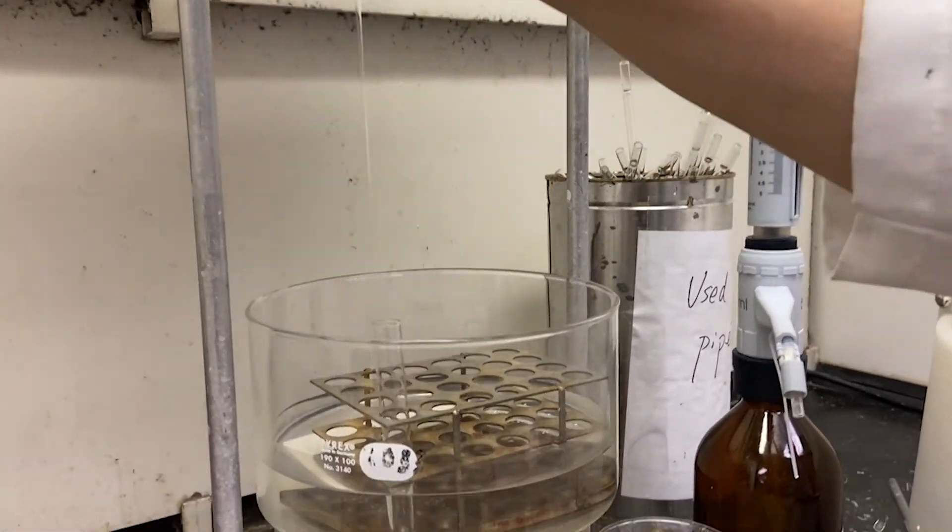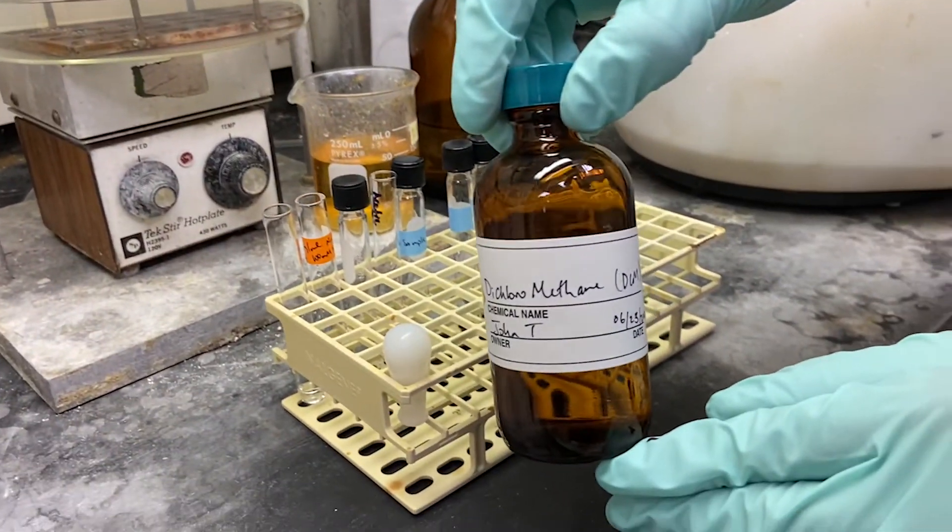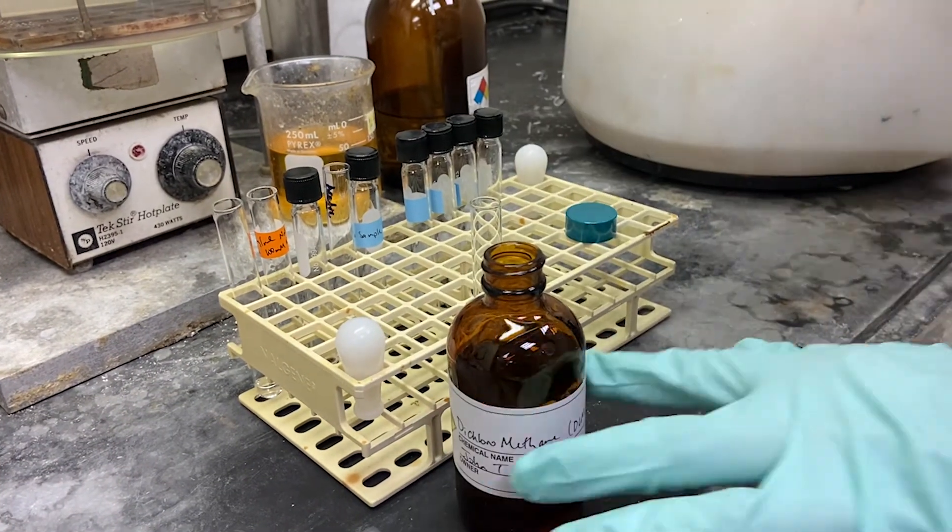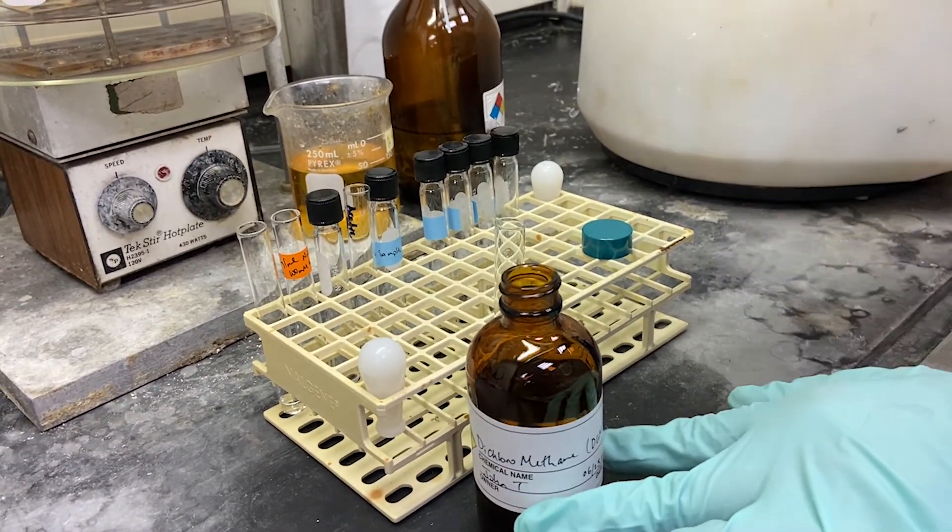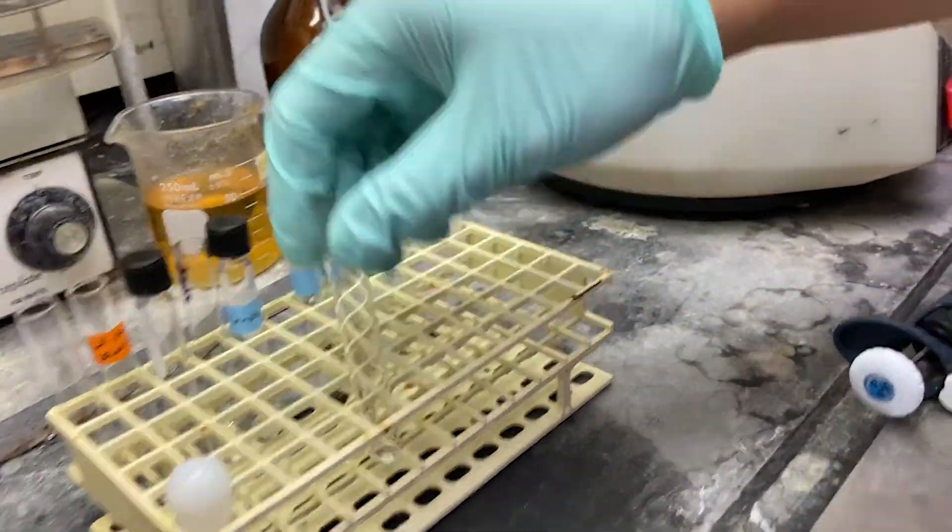After the sample has dried down, it is reconstituted in 150 microliters of DCM, transferred to a GC vial and then injected into a GC-MS for analysis.